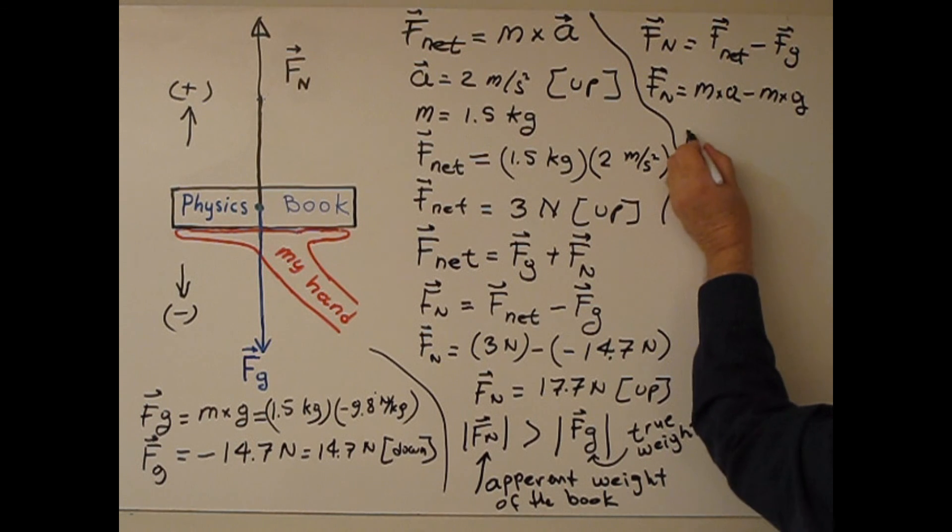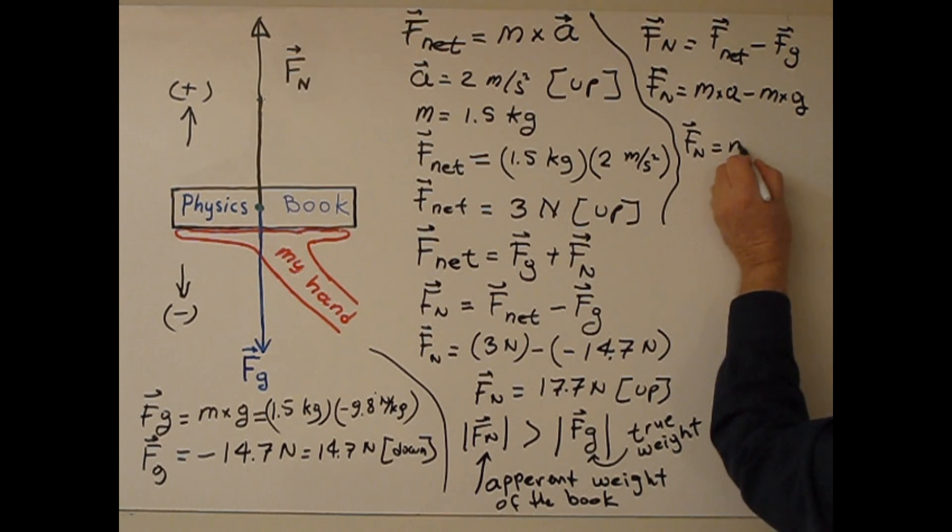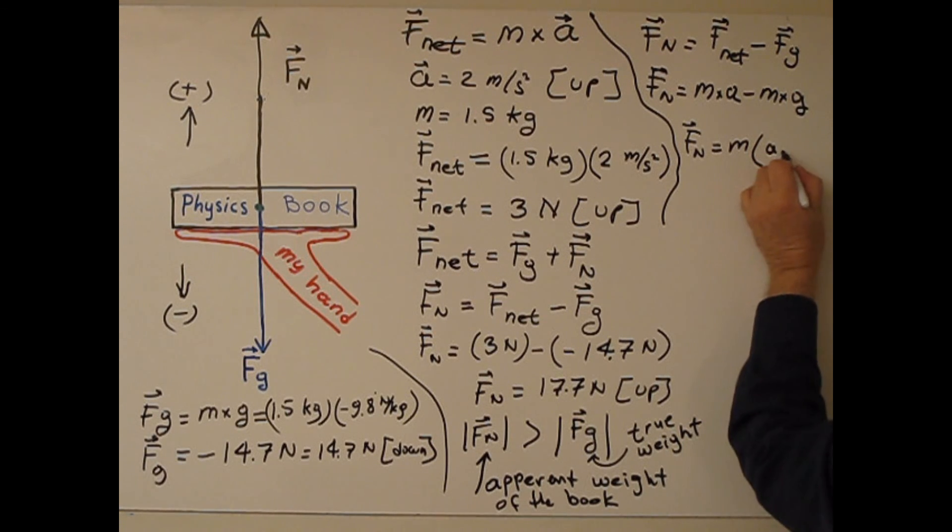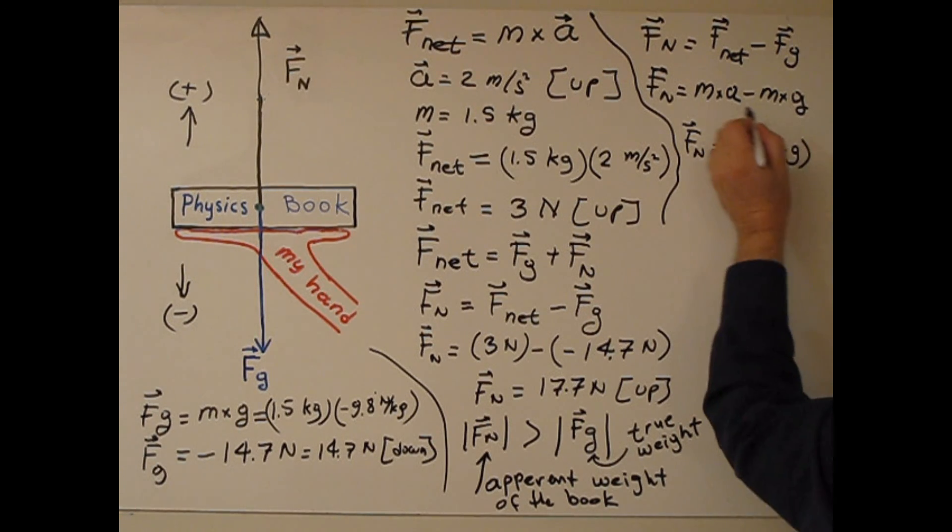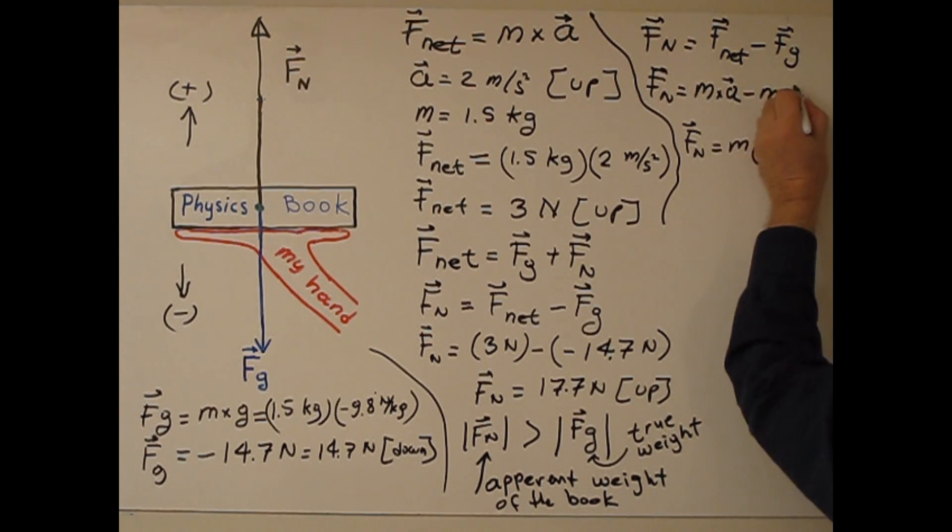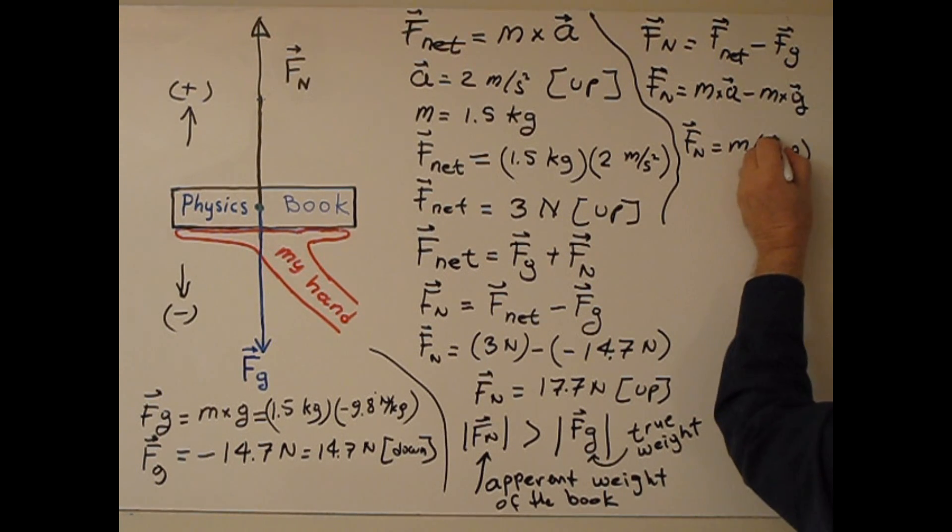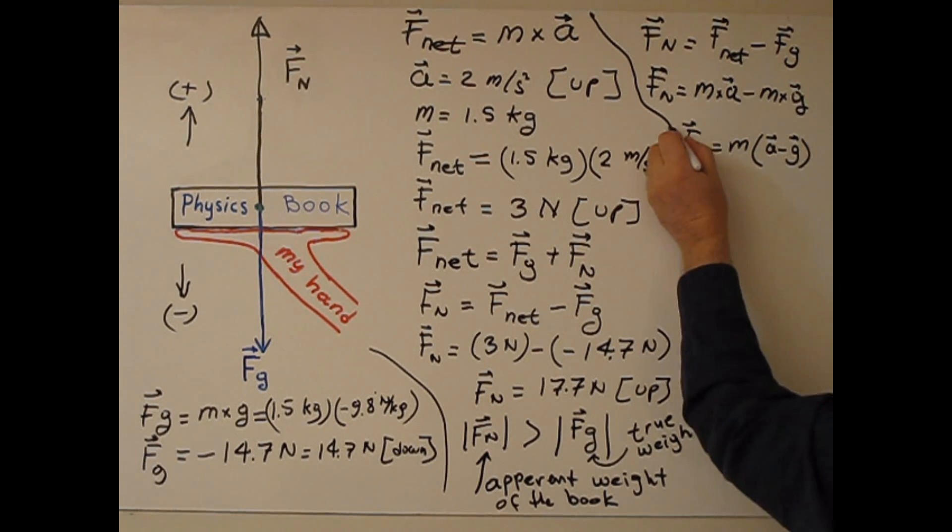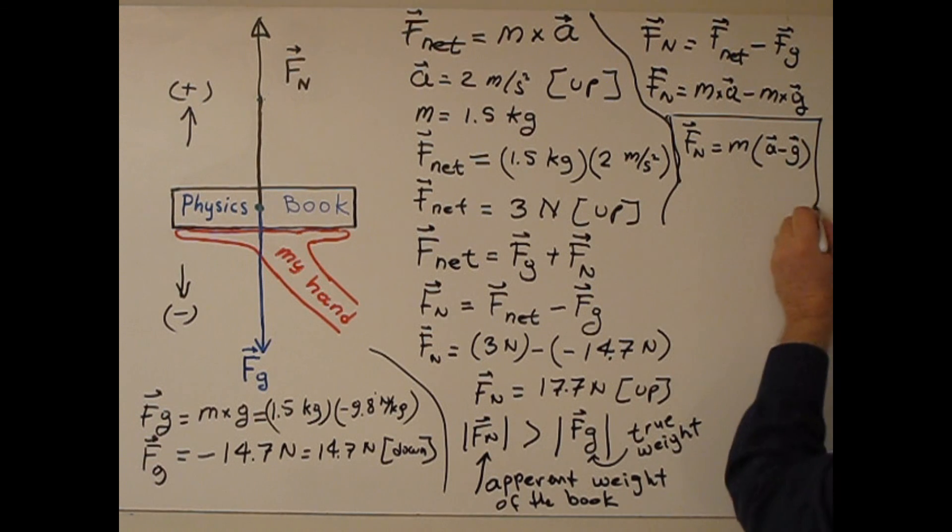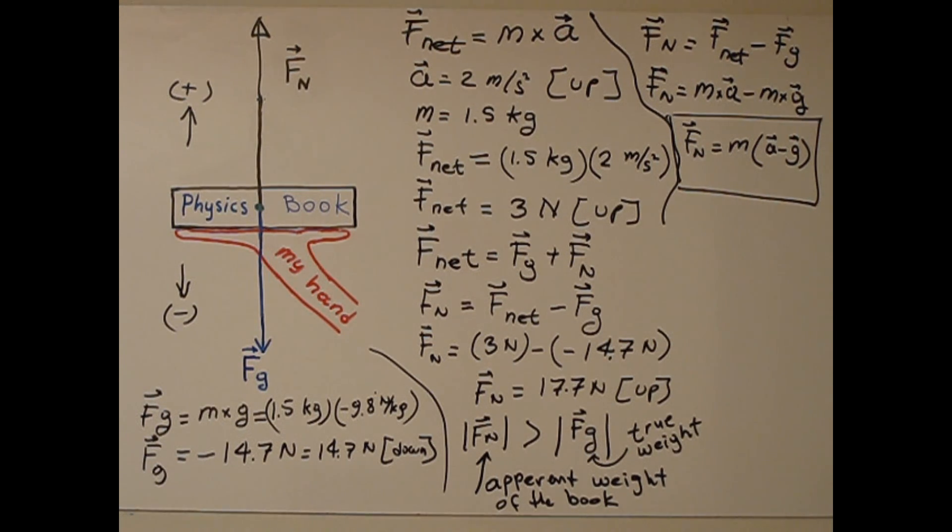So if we factor this, factor M out, A minus G. I put the arrow here. So this is the formula for apparent weight.